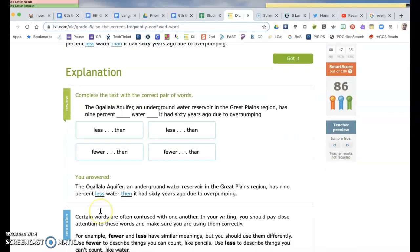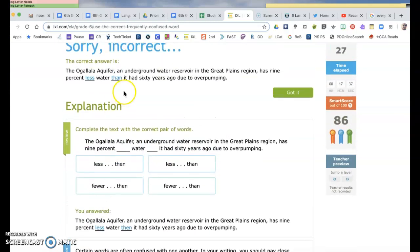It had 9% less water or fewer water. Well, we'll say less. Oh, I used, I flipped my then and than. Oh, because it's comparing, not using time. That was my stupid mistake. Because it's comparing what it was like at that time to the time now. It wasn't saying do this, then do that.